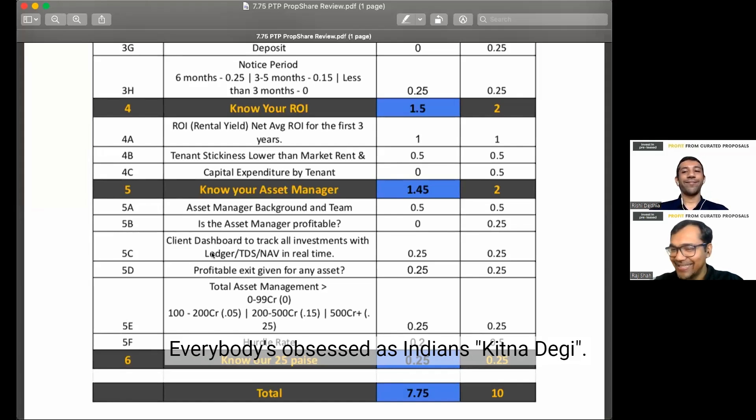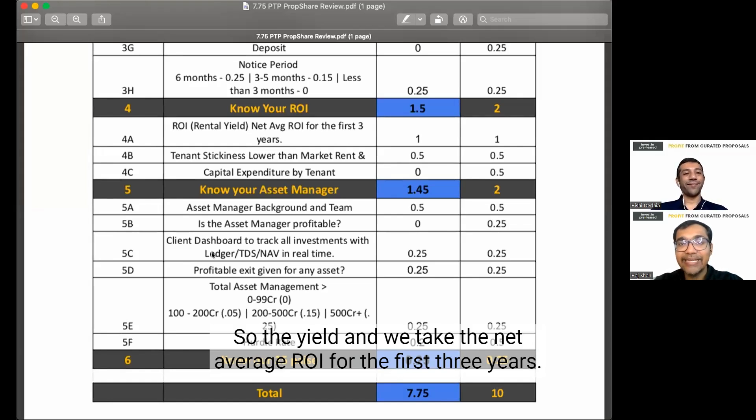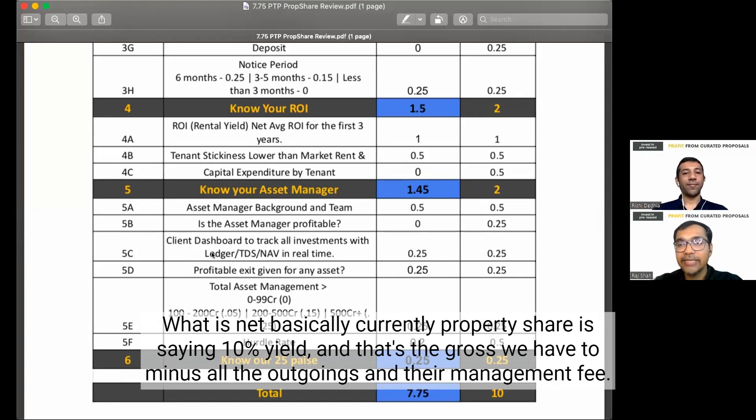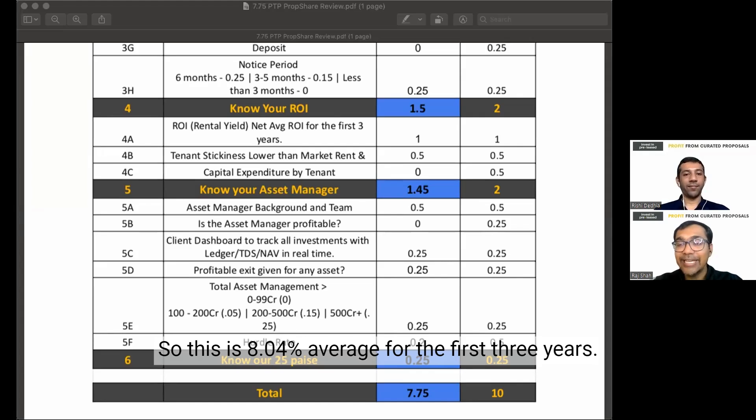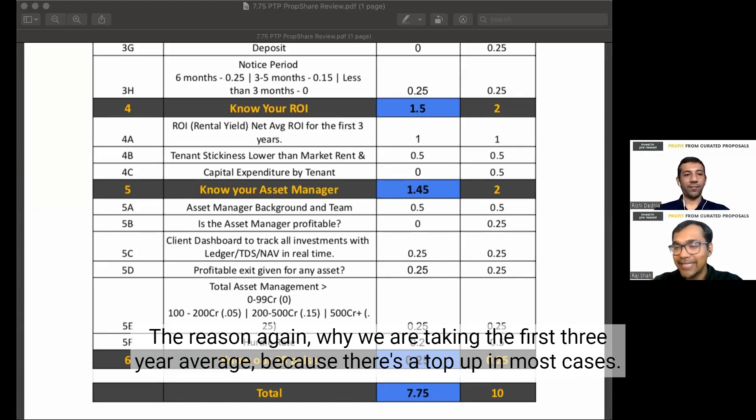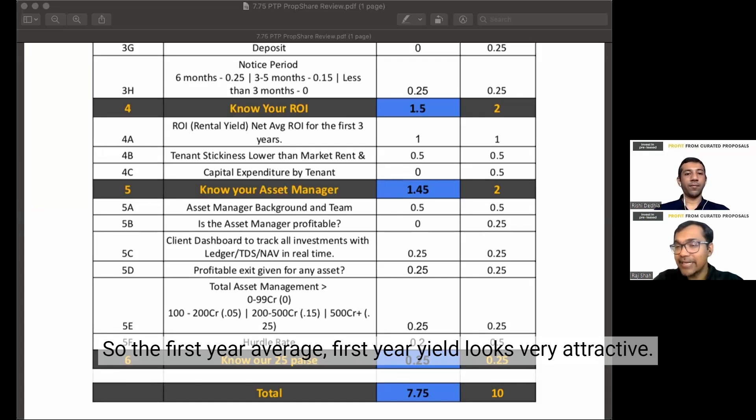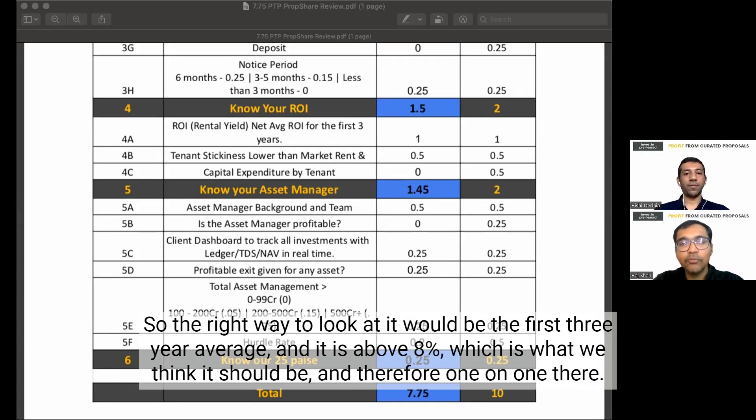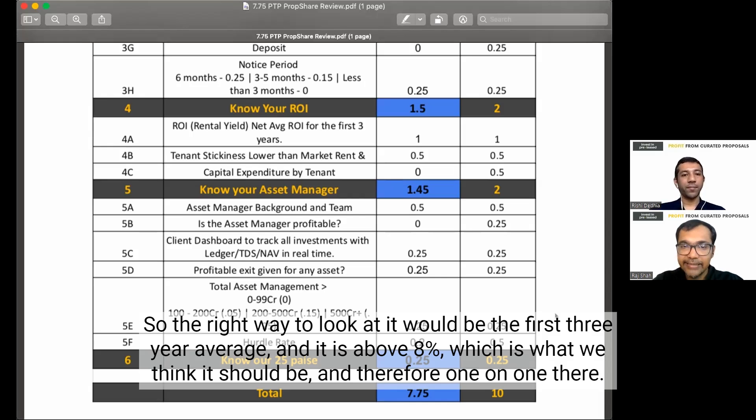So we now come to know your ROI. Everybody is obsessed as Indians, how much do you give it? So the yield and we take the net average ROI for the first 3 years. What is net basically, currently PropShare is saying 10% yield and that's the gross. We have to minus all the outgoings and their management fee. That gets us net. So this is 8.04% average for the first 3 years. The reason again why we are taking the first 3-year average because there is a top up in most cases. So the first year yield looks very attractive. The second year it drops. So the right way to look at it would be the first 3-year average. And it is above 8% which is what we think it should be. And therefore 1 on 1 there.